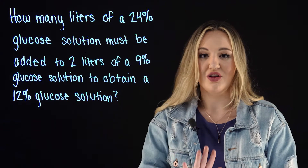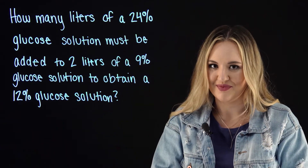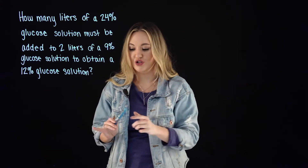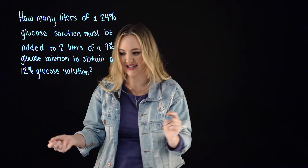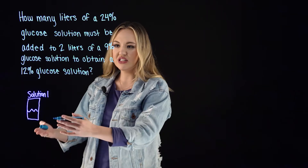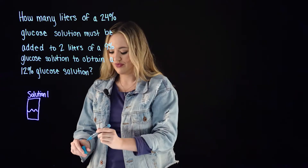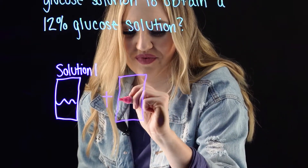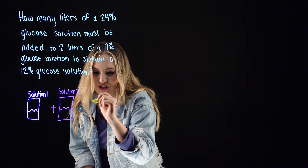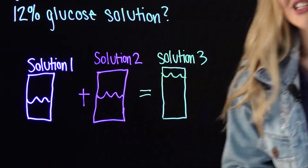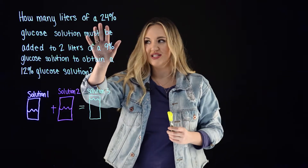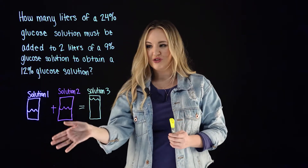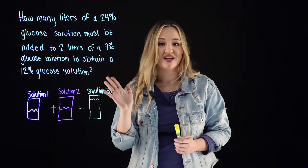Mixture questions are all about adding two solutions to obtain a mixture. We have a 24% glucose solution — that's solution one. We're adding that to solution two, and when you mix those, we get solution three. So in our case, the 24% glucose solution is solution one, the 9% glucose solution is solution two, and you mix both of those to obtain the 12% glucose solution, which is the mixture or solution three.